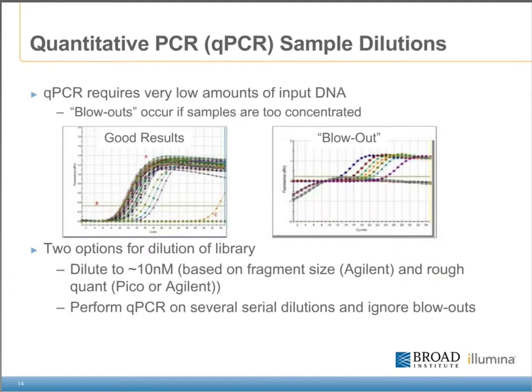One nice thing about the qPCR assay is that it requires very low amounts of DNA to be successful. This can, however, cause the assay to blow out the quant if your sample is too concentrated. We avoid the blowout issue by diluting each sample to around 10 nanomolar based on the rough quant produced by the Agilent Bioanalyzer during library size QC. We also run each sample in triplicate. If you do not want to dilute the whole sample, you can perform a serial dilution and qPCR quant all of them — some of the dilutions should give good results, and you can just ignore the blowouts.